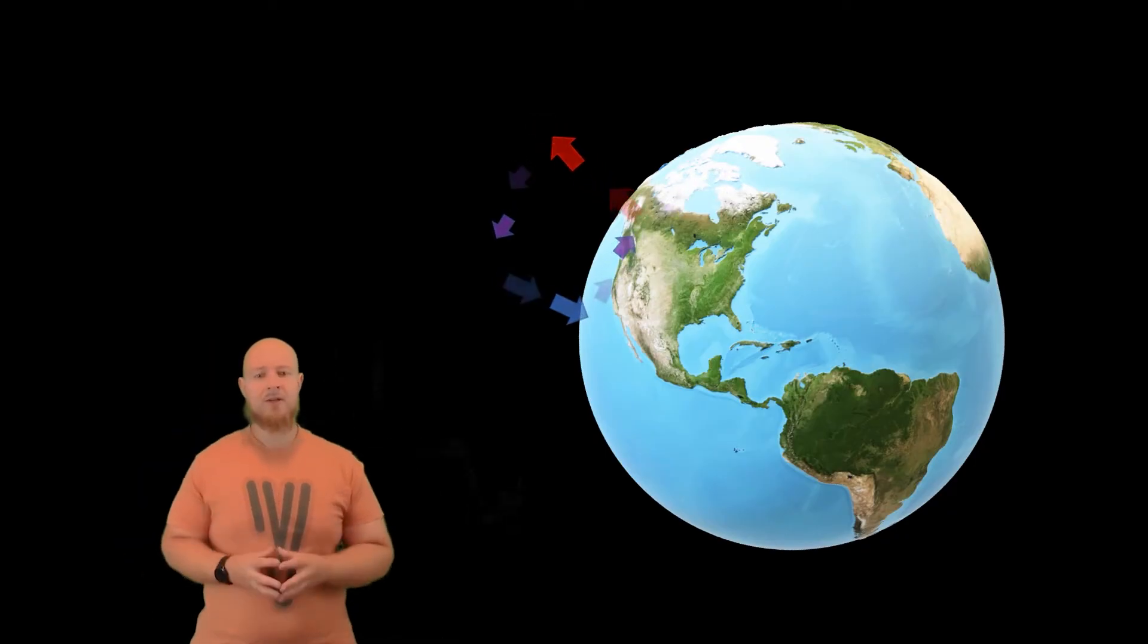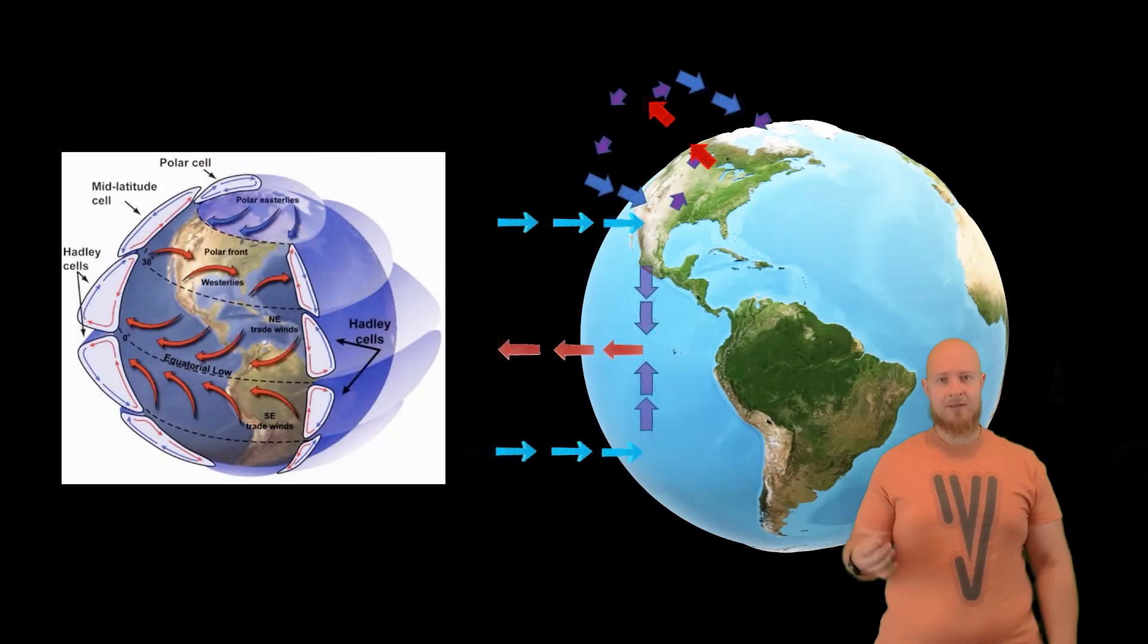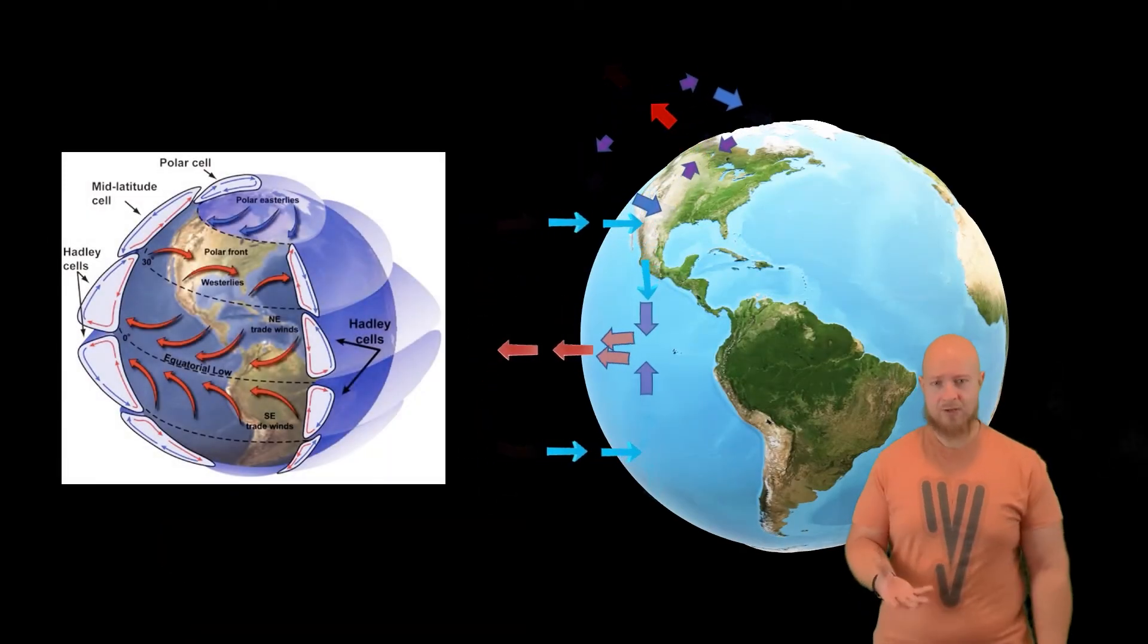Just like the other cells, as the air rises, it diverges at the troposphere and sinks down at the 30 degree latitude line. And these are our three major convection cycles.